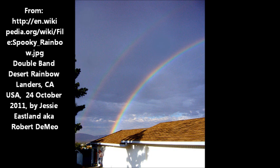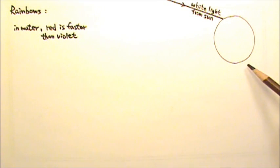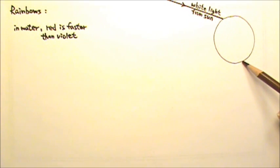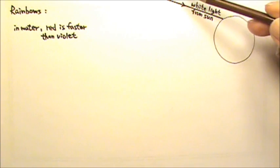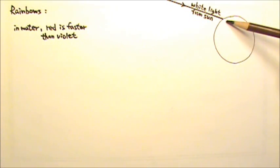We see rainbows usually when the sun is kind of low in the sky and there is mist in the air. So instead of glass prism, we have water droplets in the air to bend the light. Water droplets are spherical in shape because of water's surface tension. So here we have an enlarged water droplet.